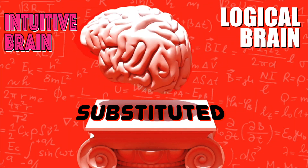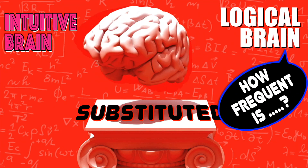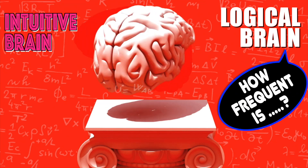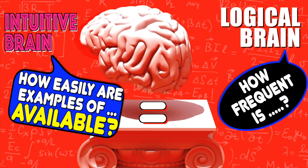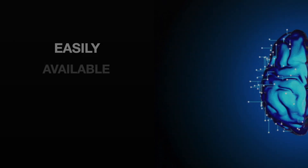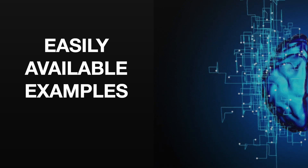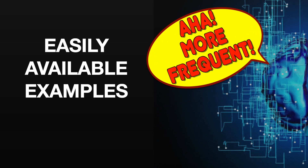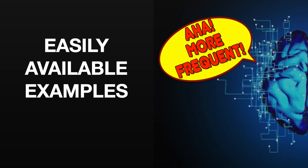So to our minds, the question 'how frequent is something' sounds the same as 'how easily can I recall examples of something?' The more easily the examples of something are available to our brain, the more frequent we think they happen.